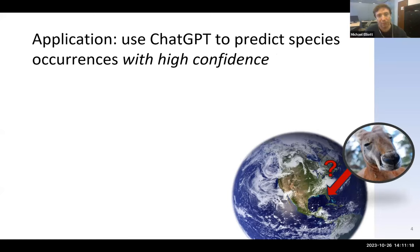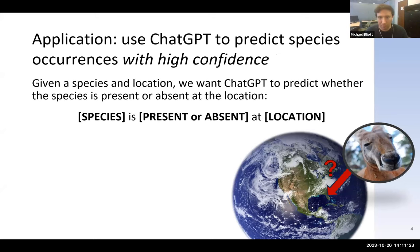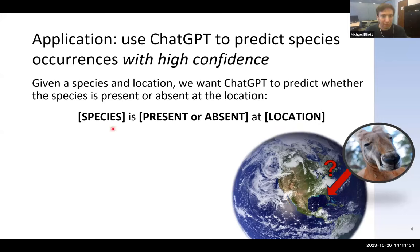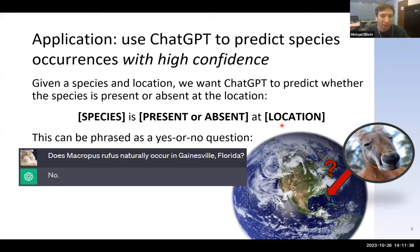Our specific application is to use ChatGPT to predict species occurrences with high confidence, limiting the number of errors it makes. For a specific species and a specific location, we want ChatGPT to tell us whether the species is present or absent. You can frame this as a yes or no question in natural language and submit it to ChatGPT.